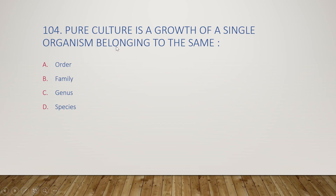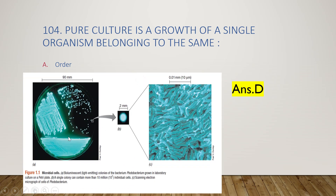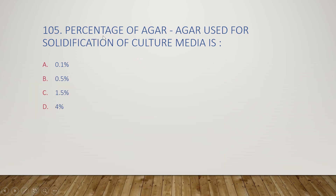Next question: a pure culture is a growth of a single organism belonging to the same order, same family, same genus, or same species? The right answer is option D, same species. In a single colony, microorganisms belonging to the same species are present — more than 10 million (10^7) individual cells in a single colony, all belonging to the same species.